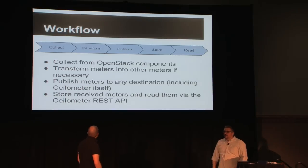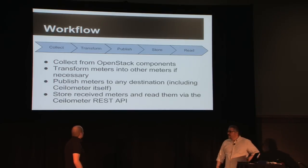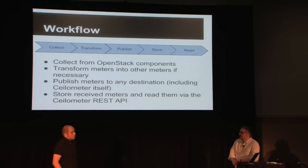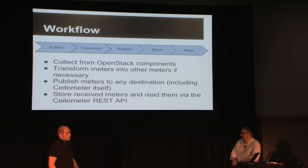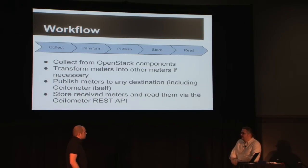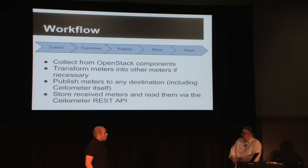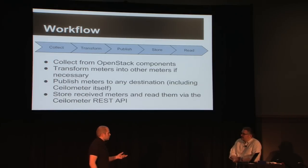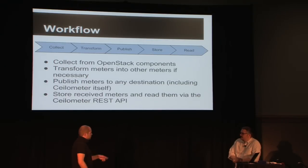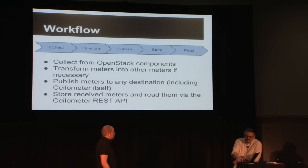The great new stuff in Grizzly is actually transform and publish — we did not have these before. We did only collect, then store, and read. We did this in Grizzly. I'm going to introduce you to all of these steps and what you can do with them. We'll have a deeper session on Wednesday about the architecture of Ceilometer.